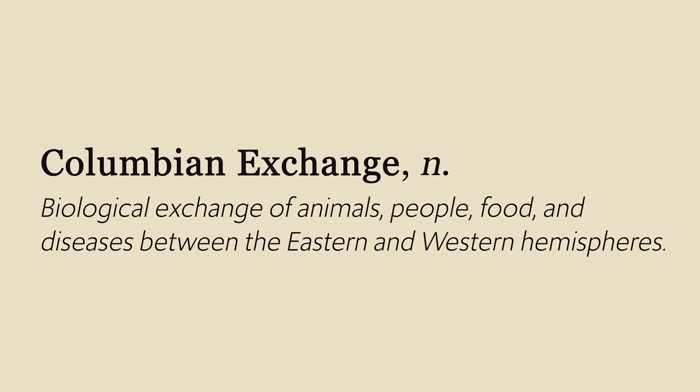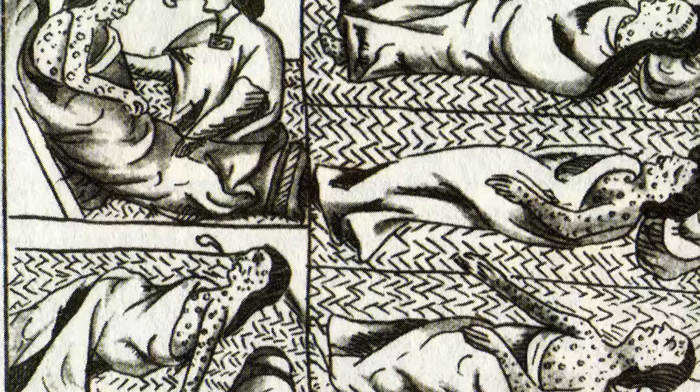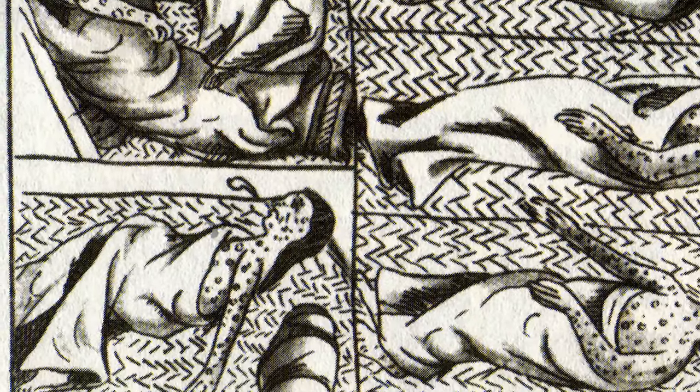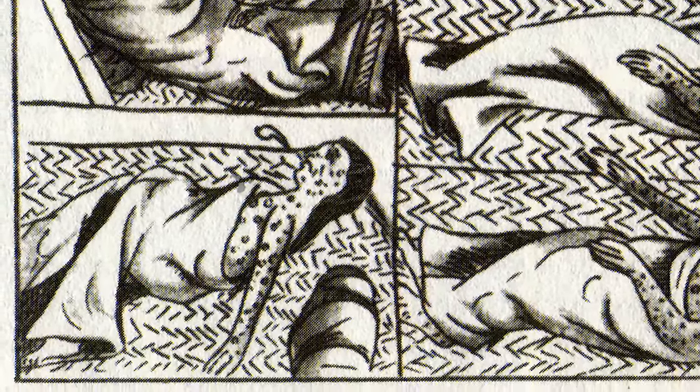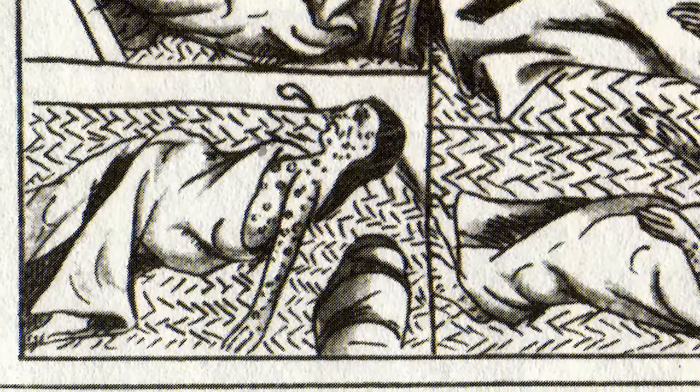Essentially, the Columbian Exchange was a biological exchange of animals, people, food, and diseases between the eastern and western hemispheres. It's going to be important for you to know at least some specific examples. Disease is the most important: Europeans brought smallpox with them, and when it began to spread among the natives of the Americas, the consequences were devastating — somewhere in the neighborhood of 50 to 90 percent of the native population was killed. The natives sent syphilis back with the Europeans. In terms of food and animals, Europe introduced sugar and horses to the Americas, and the Americas sent potatoes, maize, and guinea pigs back to Europe.